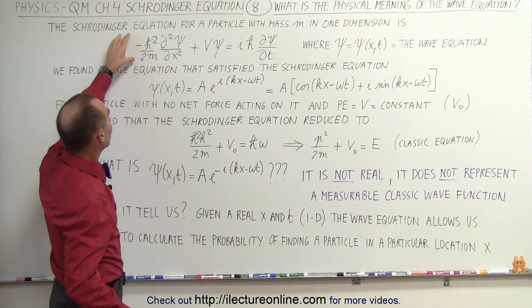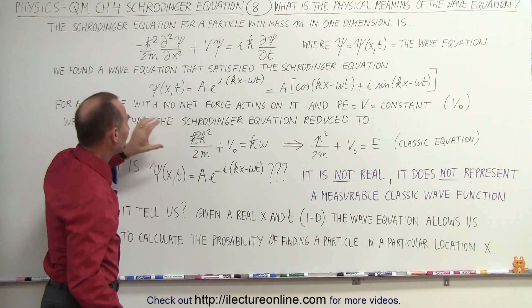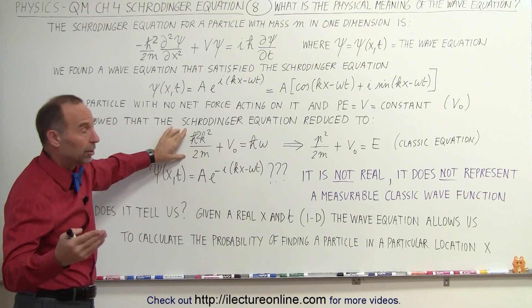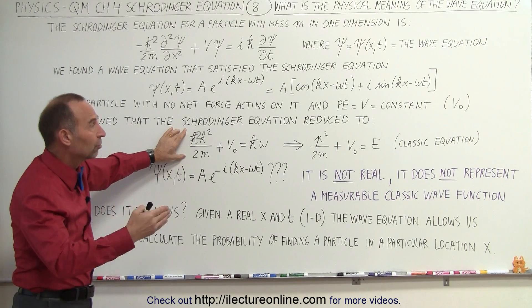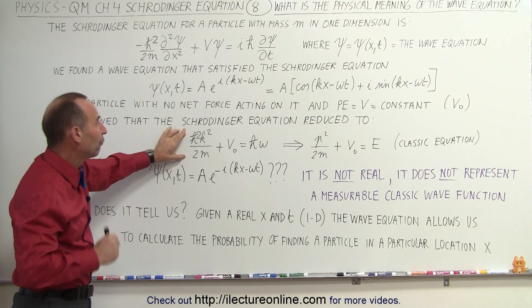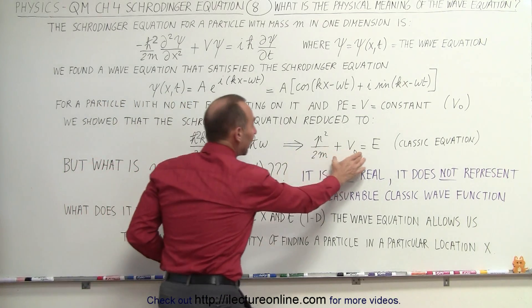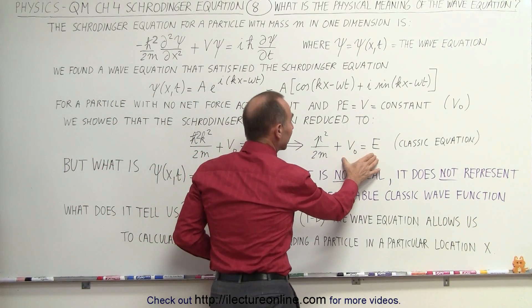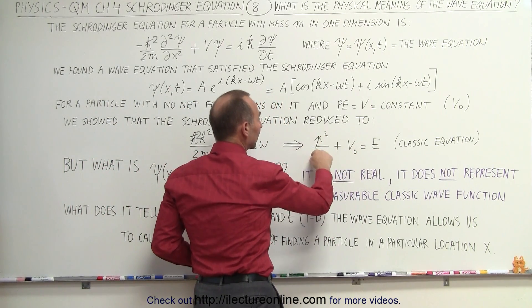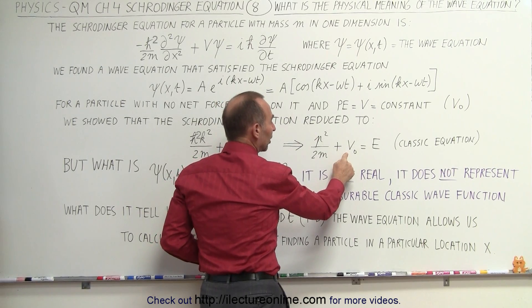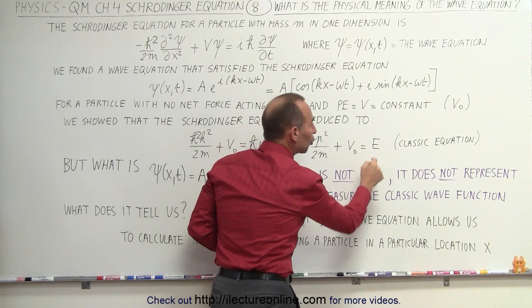So we showed that in a previous video, that we took the Schrodinger equation like this, and we could write it like this if we assume a particle that has a constant potential and that has no forces acting on it. And we also showed that it then reduces to the classic equation in classical mechanics, where this represents a kinetic energy, that represents a potential energy, together adds up to the total energy.